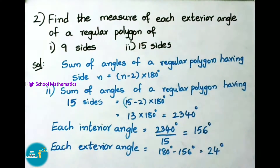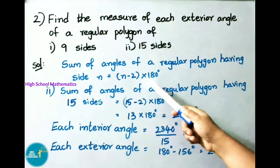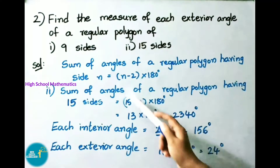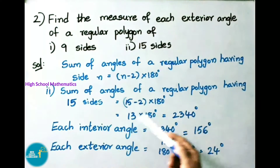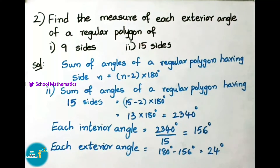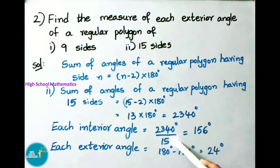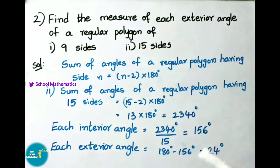For 15 sides: sum of angles equals (15 minus 2) into 180, that is 13 into 180 equals 2340 degrees. Each interior angle equals 2340 divided by 15, giving 156 degrees. Each exterior angle equals 180 minus 156, that is 24 degrees.